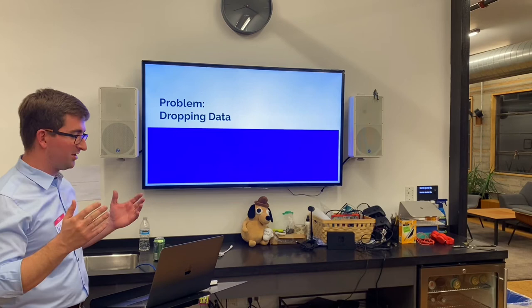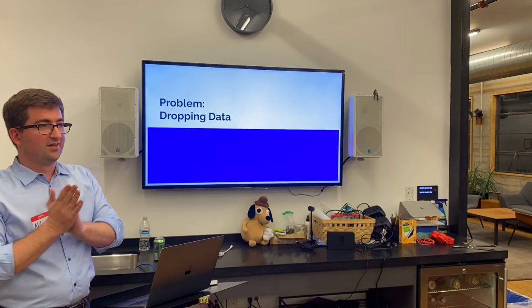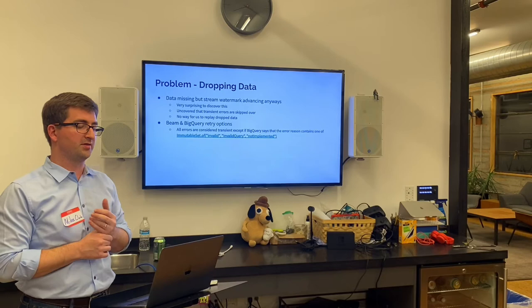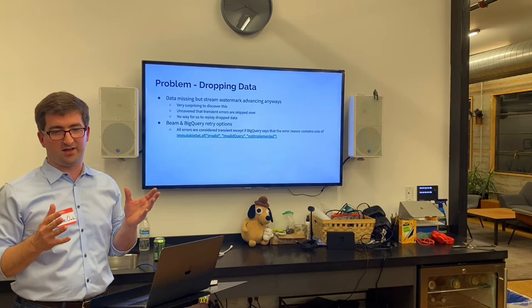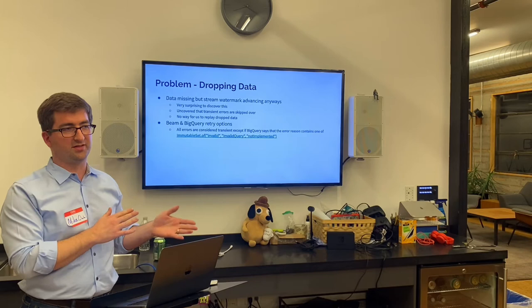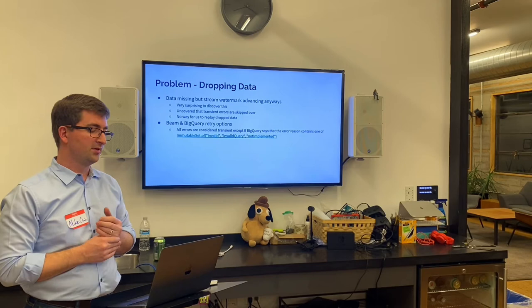Then we had a second problem: dropping data. As I was putting this talk together, this was related to the schema errors. We would have a schema error and then Beam would keep plowing forward. We were having to understand what Beam was, wrapping our heads around watermarks and the behavior of Beam itself. When we saw that Beam was progressing and it seemed like things were going correctly, but then we were missing rows, we were confused. In our case, we didn't have a way to replay it — we only have a couple days of data available in Kafka.